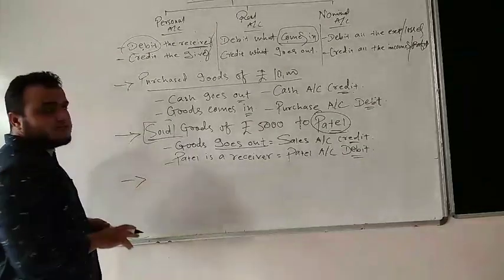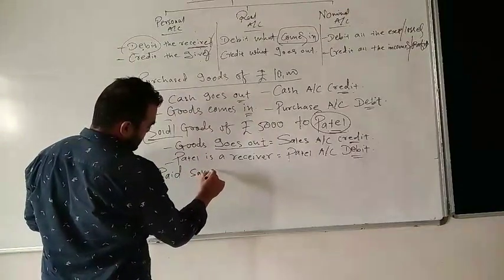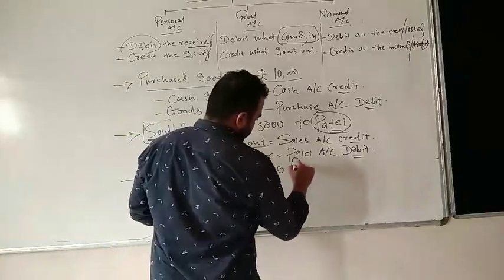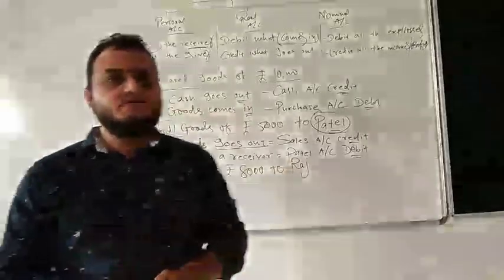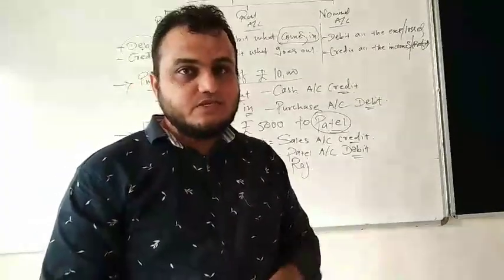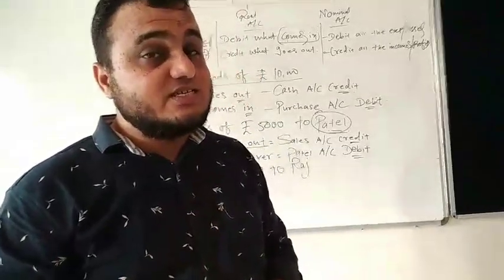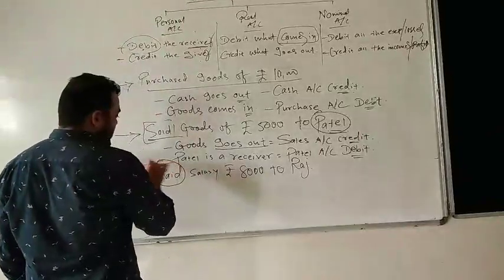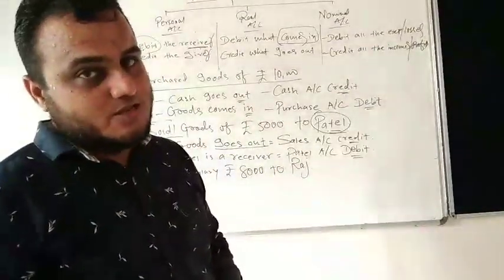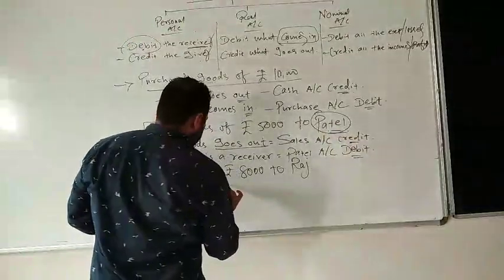Now one last transaction for today: Paid salary of rupees 8,000 to Raj. Is it an economic transaction? Yes, you have paid the salary so it affects the business. Is it a cash transaction or credit transaction? When you give salary to someone, cash goes out.